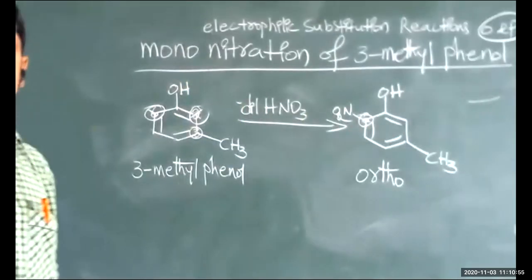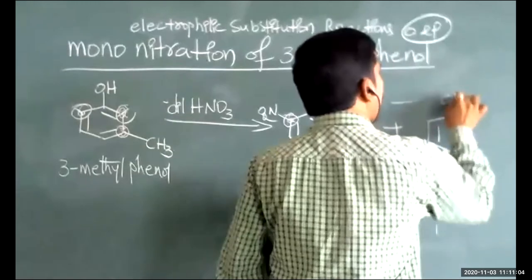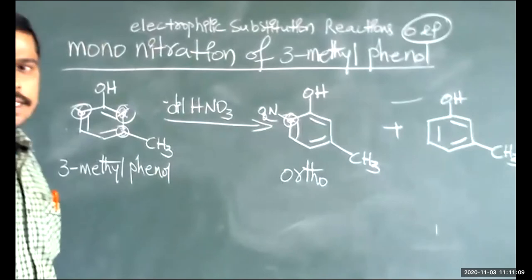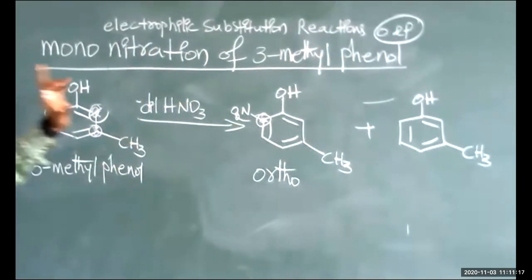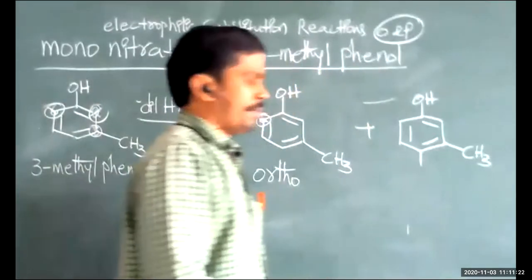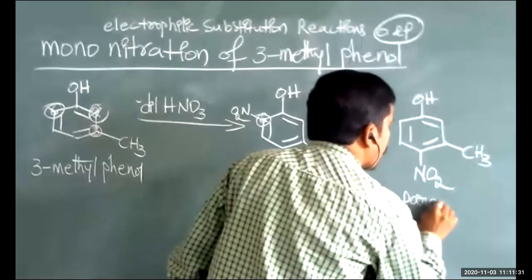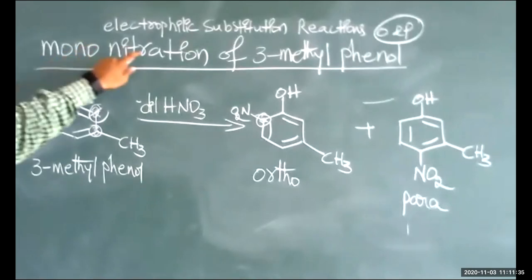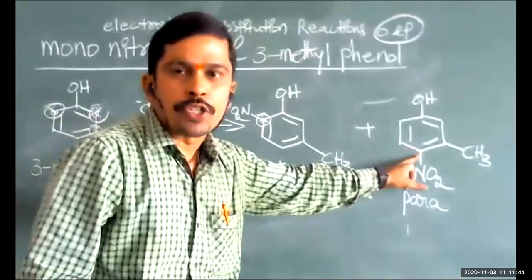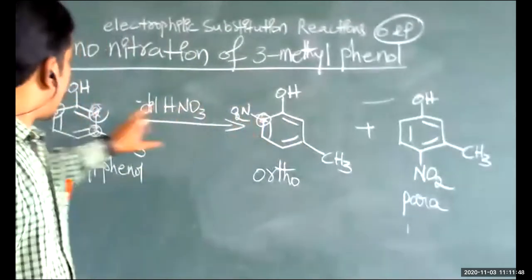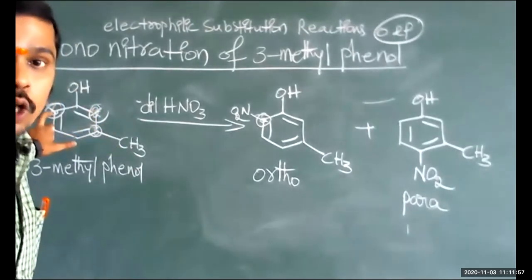The para product: nitration at the fourth position (para) gives the para product. Mono-nitration of 3-methylphenol gives both the ortho product and the para product. In the case of the ortho product, nitration takes place only at the sixth position to avoid steric hindrance, since the second position is blocked by the nearby OH and CH3 groups.